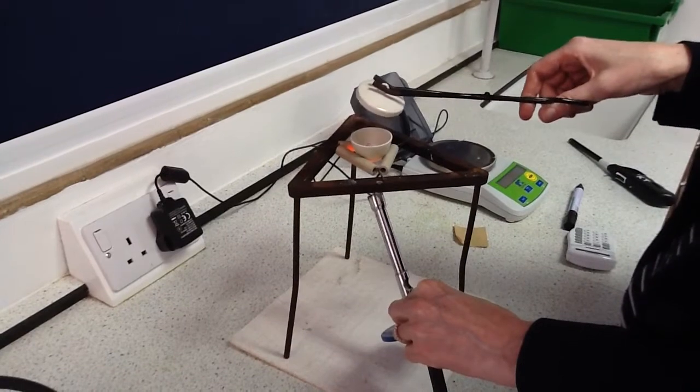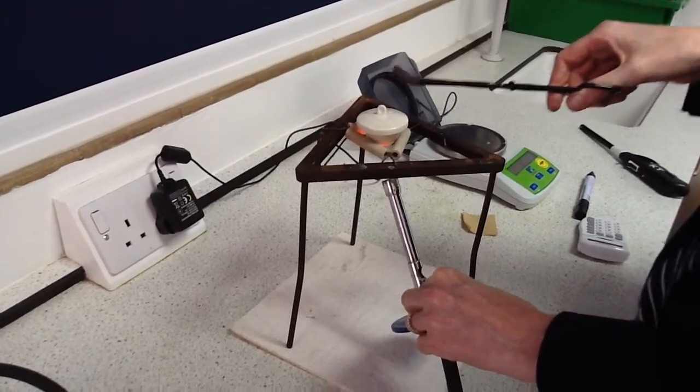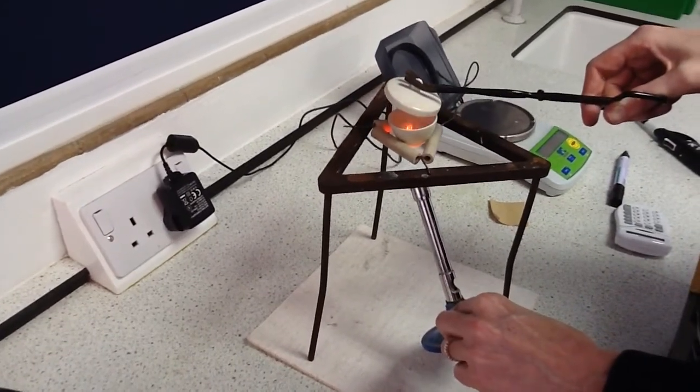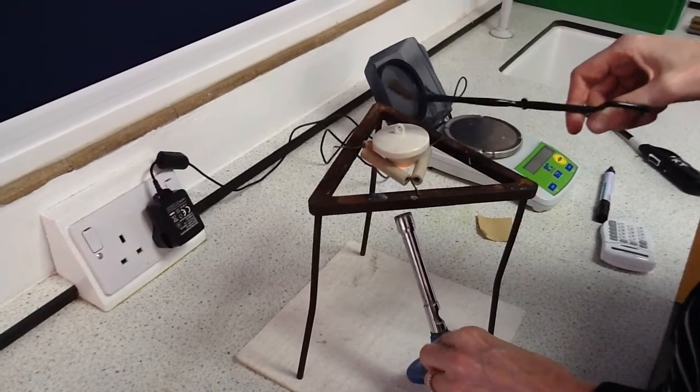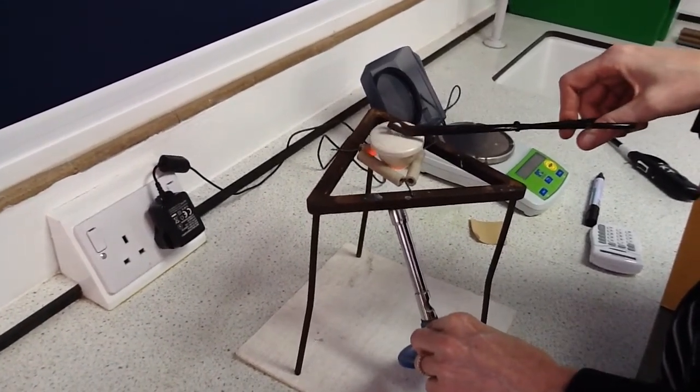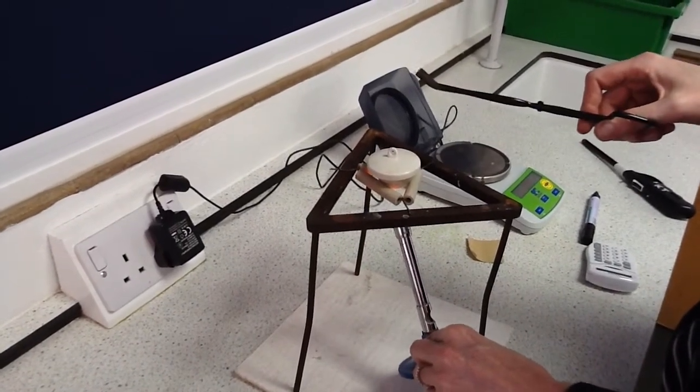Every so often you have to lift the lid to allow the oxygen in to react with the magnesium. You can see that a reaction is underway at the moment because there's a glowing coming from the crucible. You can also see that as I lift the lid we get a release of smoke. That's magnesium oxide escaping.